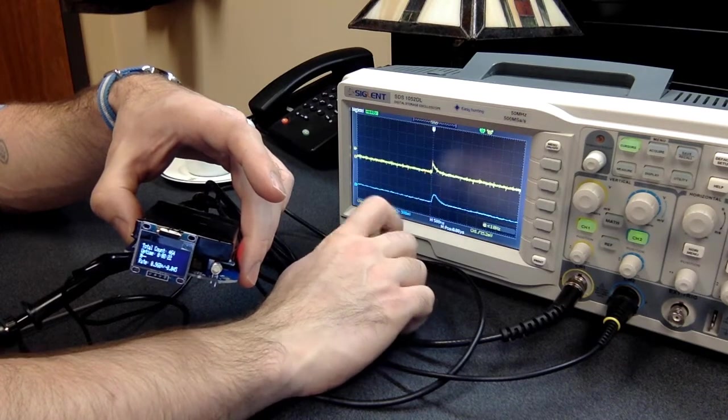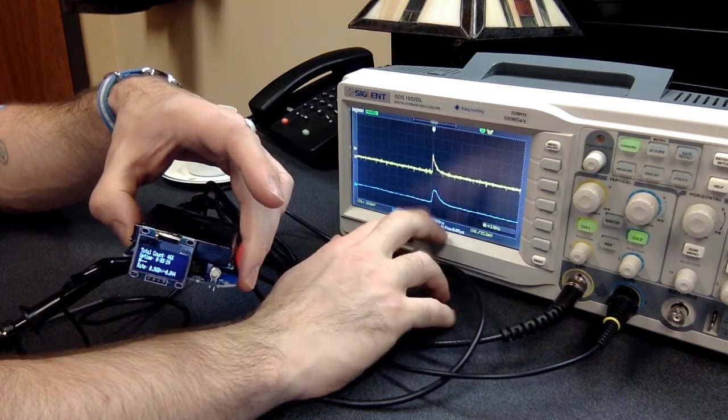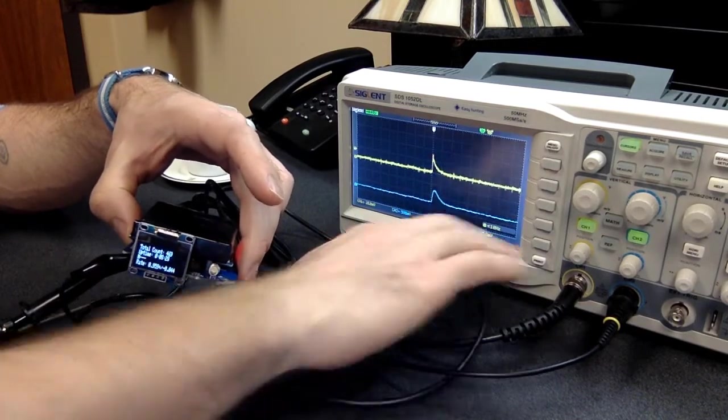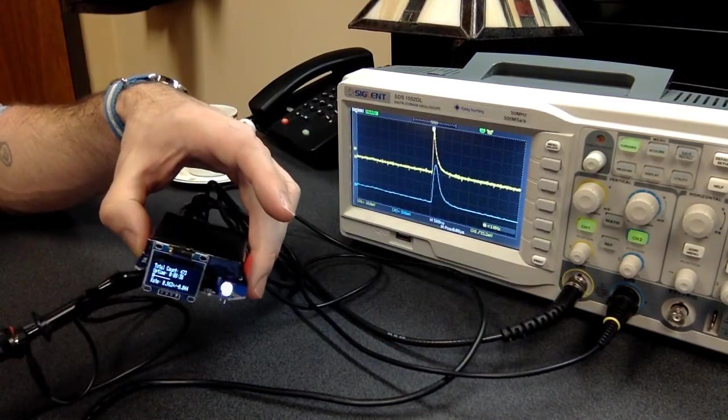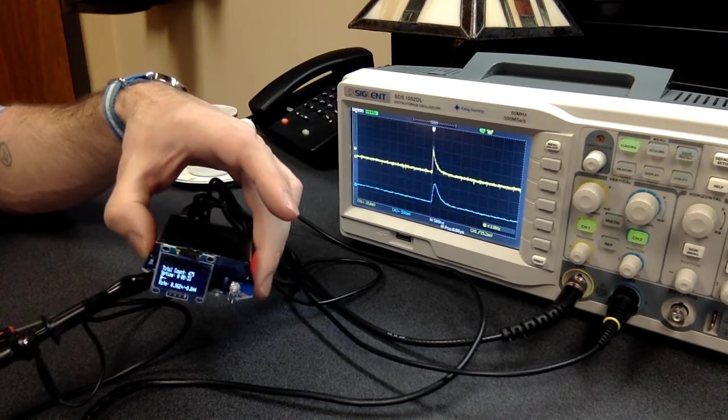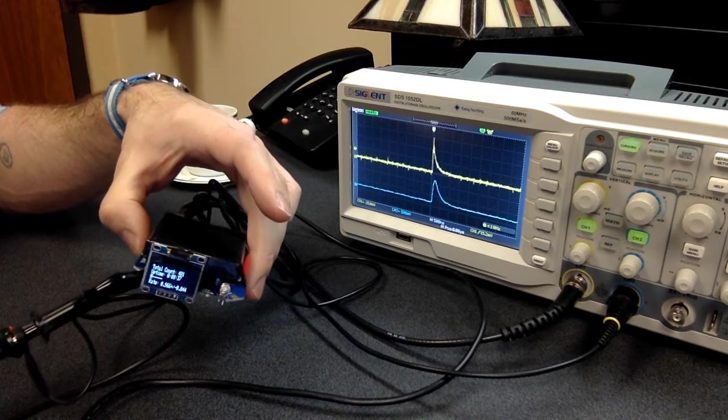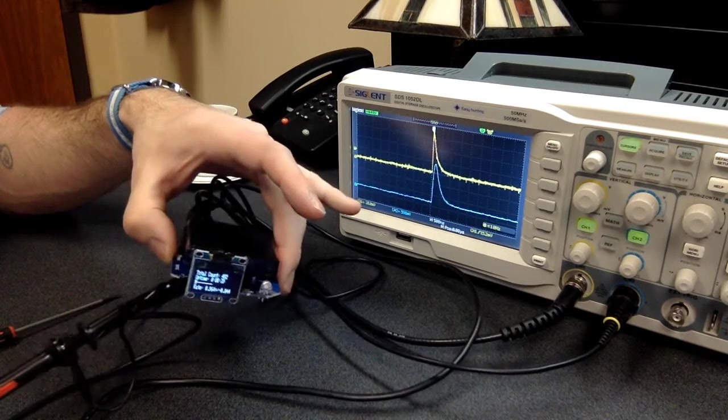And you can see that the amplified pulse looks relatively similar. Again, you're missing some of those high frequency components. Some of that is actually on purpose, so we have this capacitor that does some, sort of like limits the frequency response of the op amp during the amplification process.